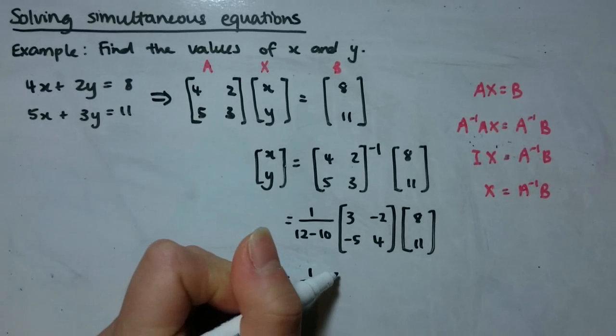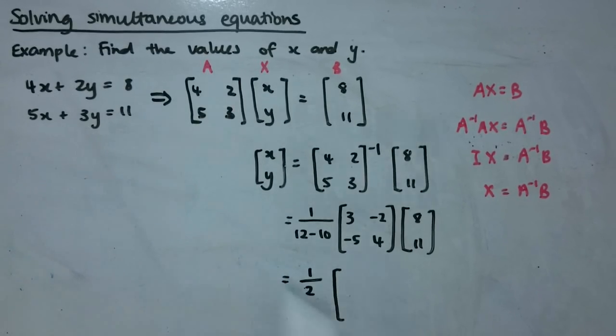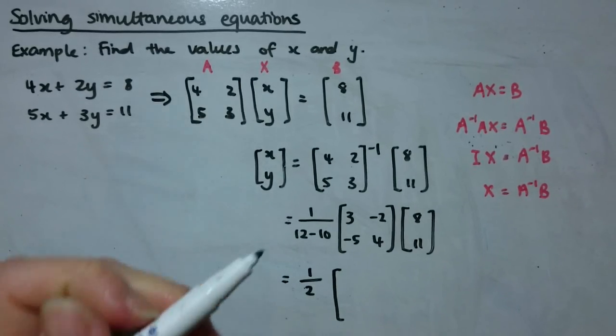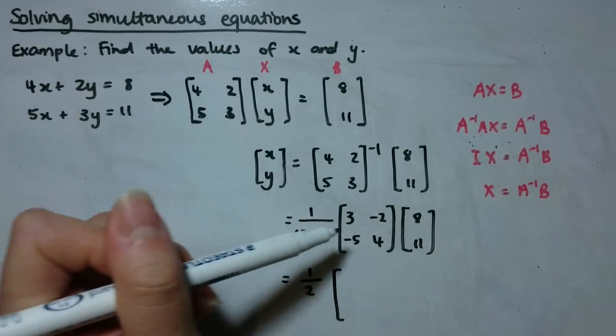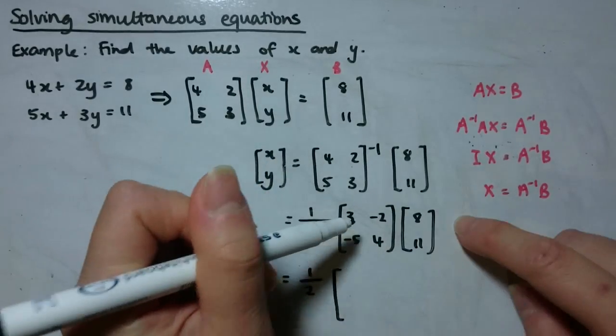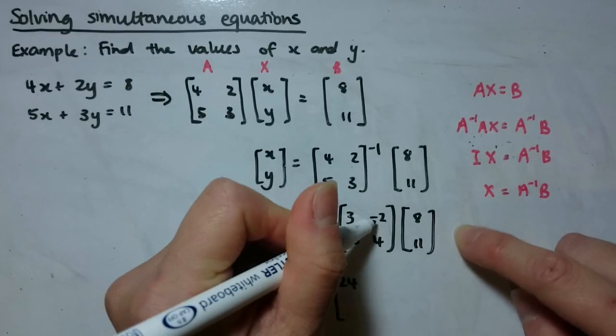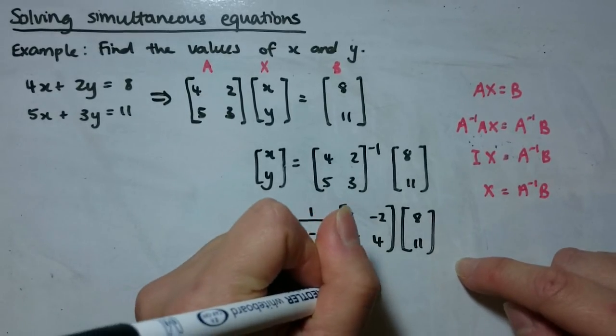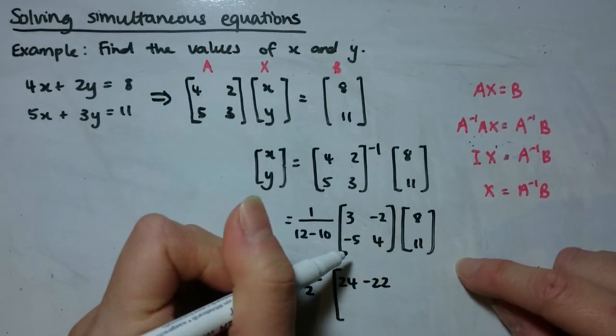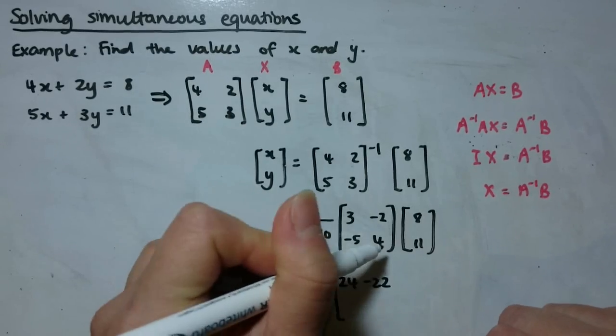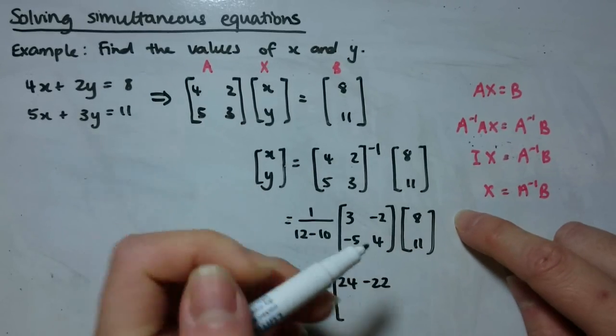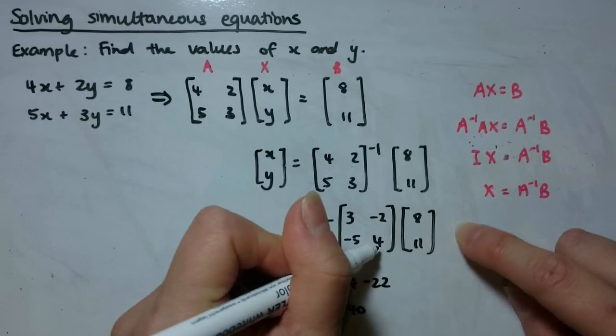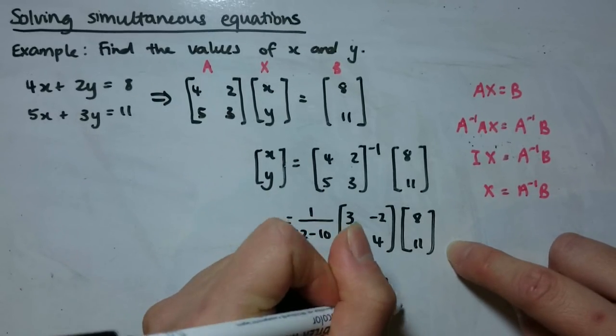Again, I'm just going to leave this as a fraction at the front and do the multiplication with integers because that will make it a little bit nicer. So remember matrix multiplication, again, row by column, so 3 times 8, 24, negative 2 times 11, 22, negative 22. And then the second row by column, negative 5 times 8, negative 40, and 4 times 11, 44.